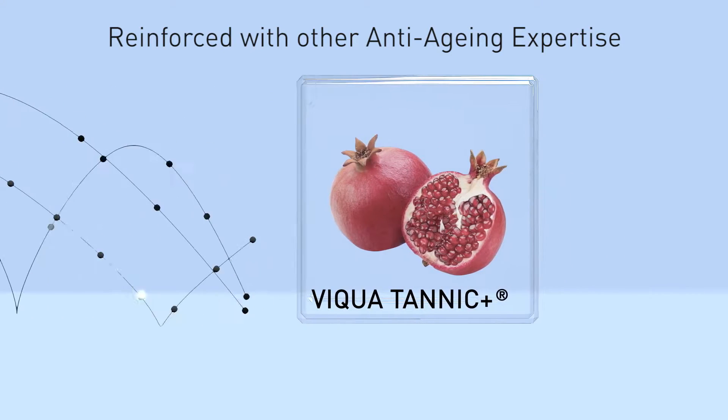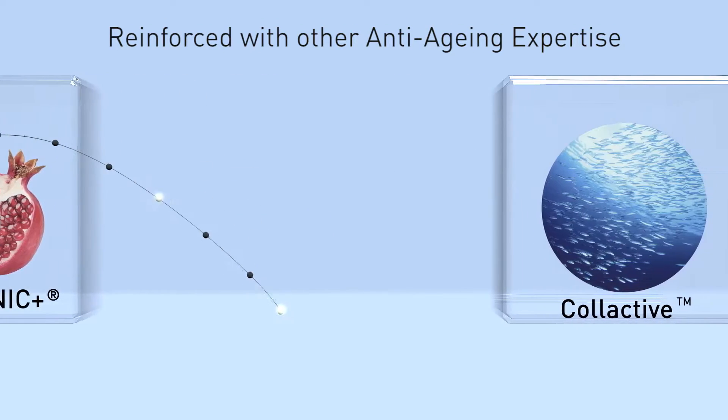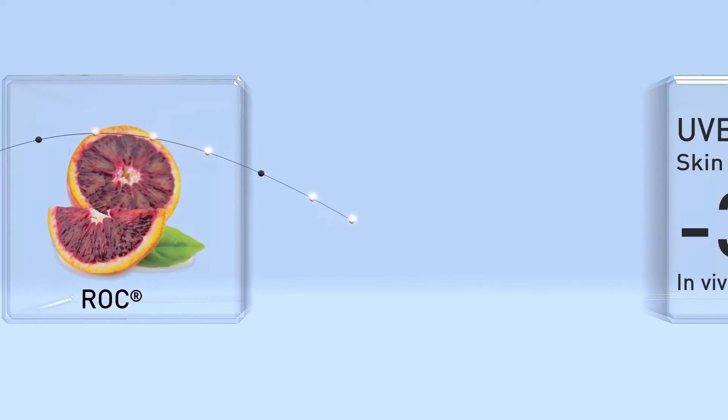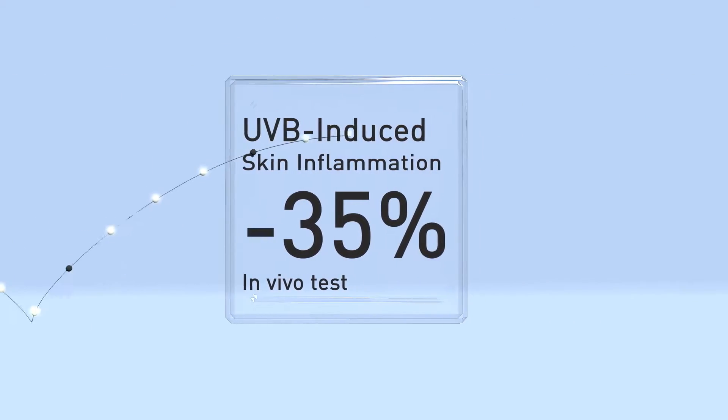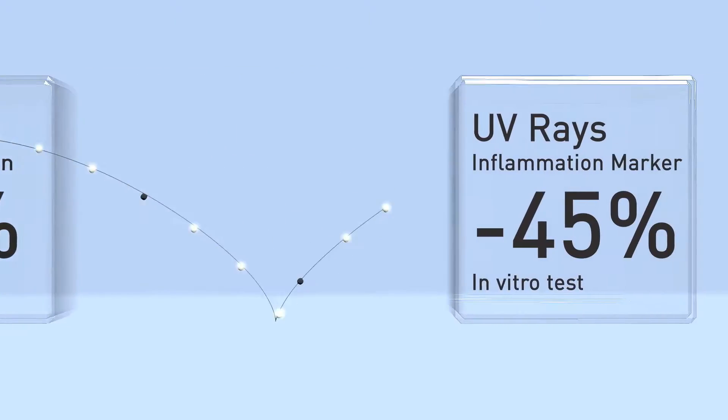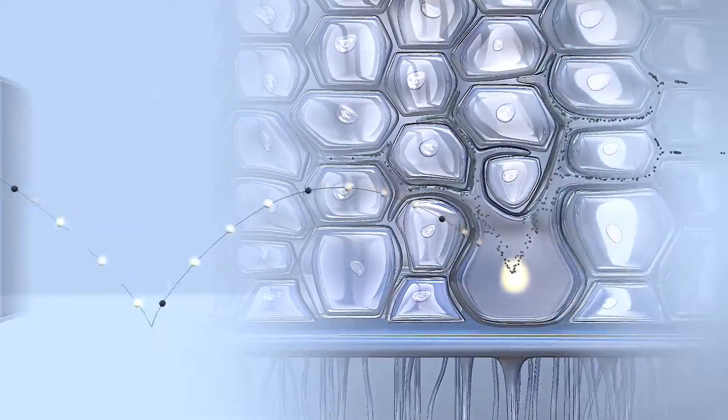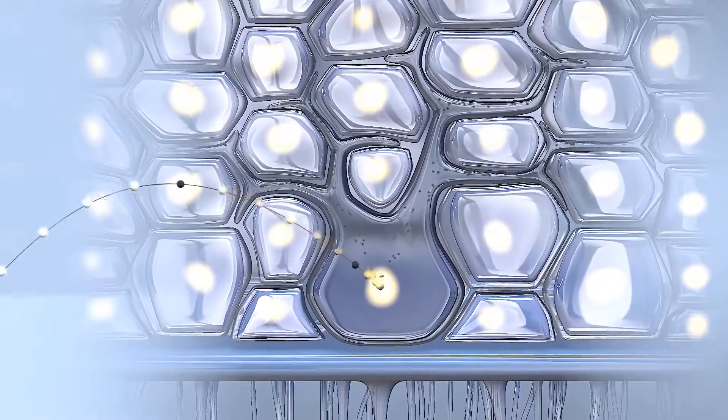Reinforced with three other anti-aging expertise, El Marino Young can effectively reduce UVB-induced skin inflammation by 35%, reduced inflammation marker for whitening effect by 45%, and successfully suppress melanin synthesis to increase viability of keratinocyte cells.